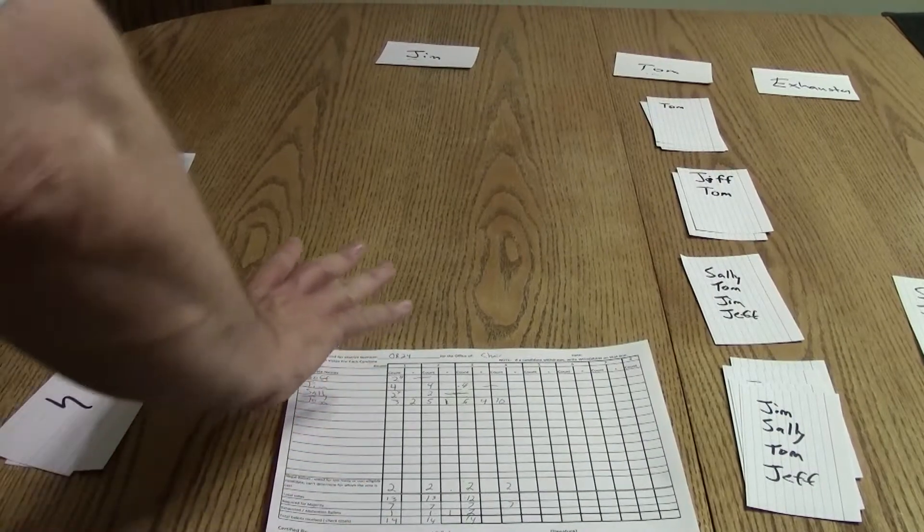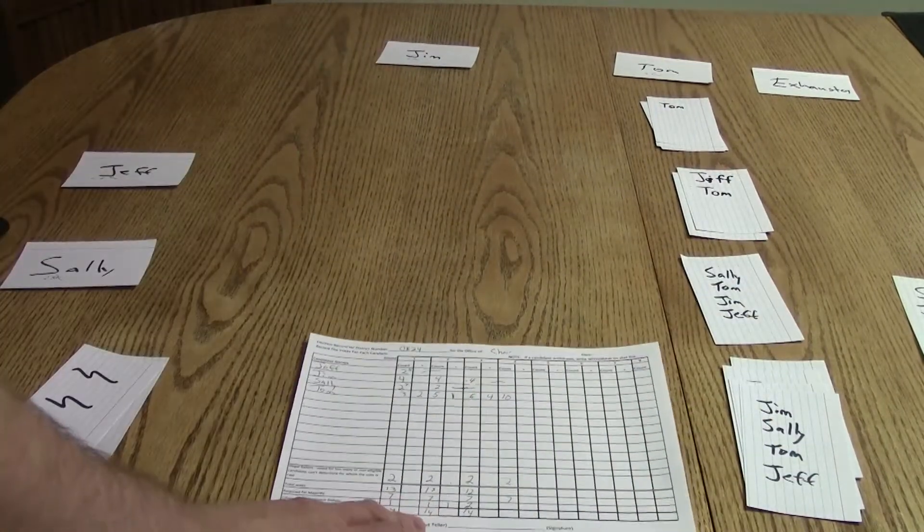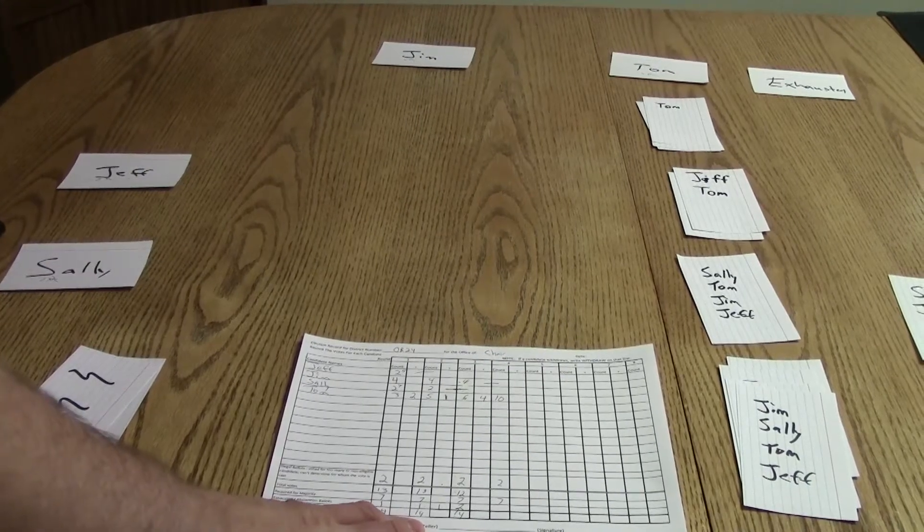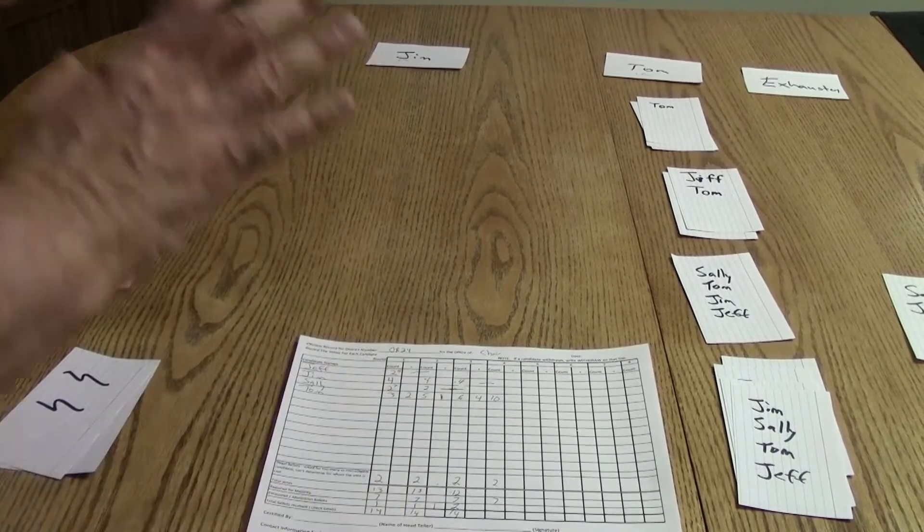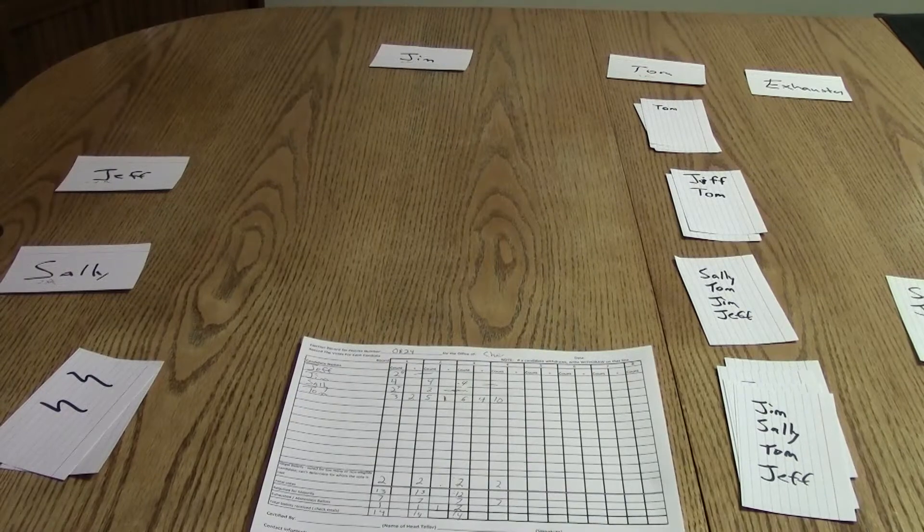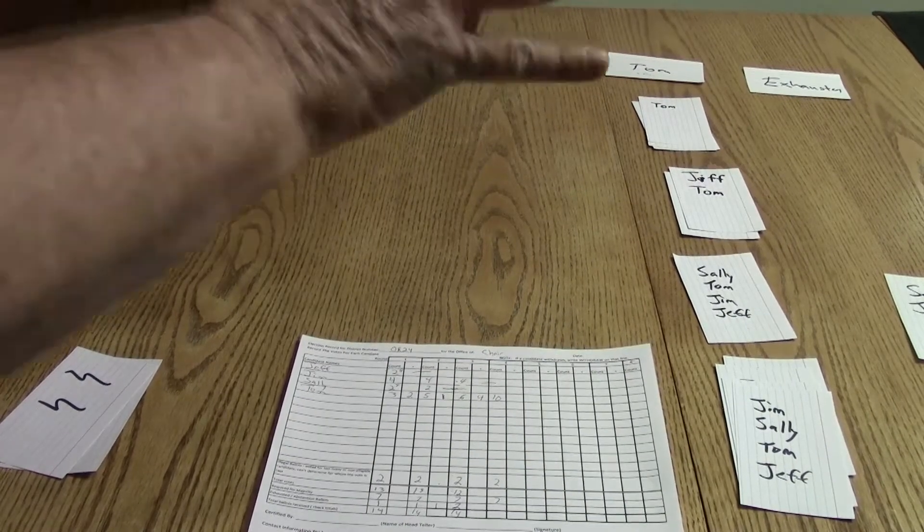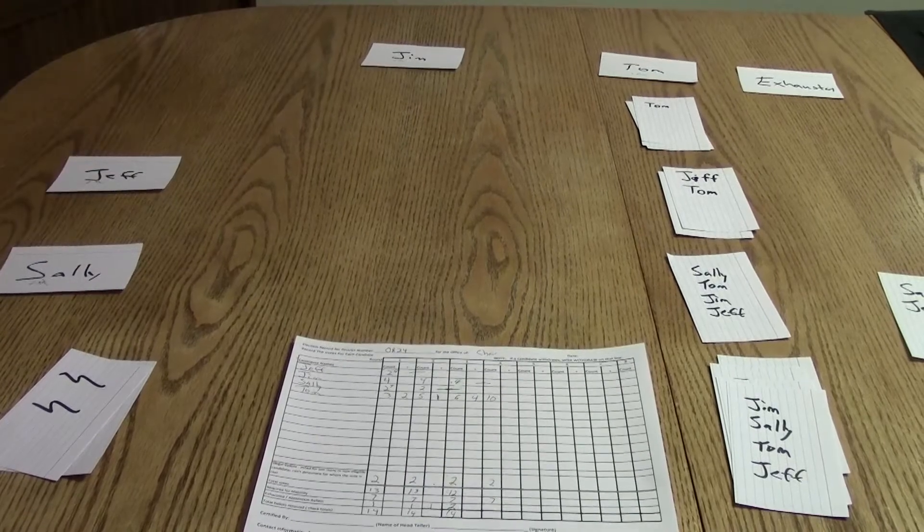All right, so this is where we ended up at the end of the last video. We had just elected Tom as our precinct chair. So let's pretend now that this election wasn't for precinct chair, but instead was for county delegate. And we have just elected Tom as our first county delegate.